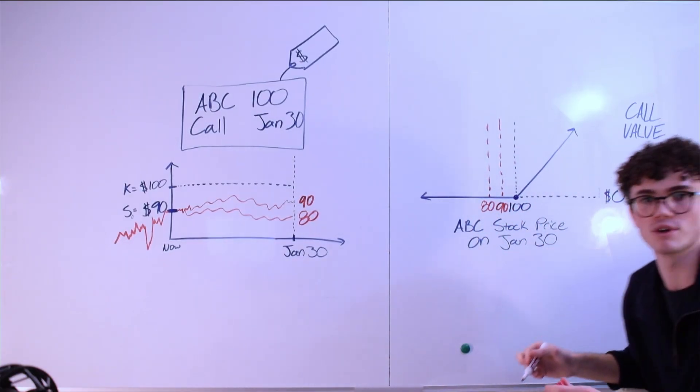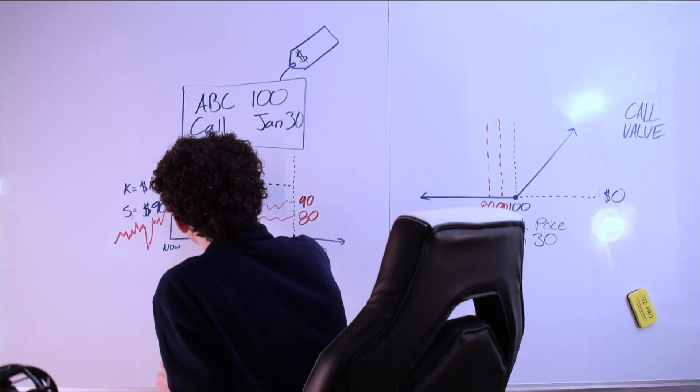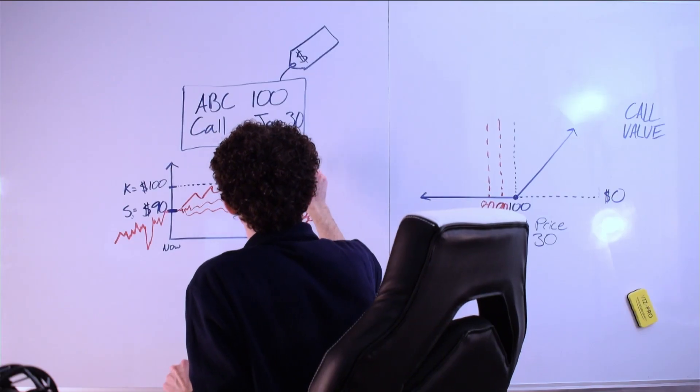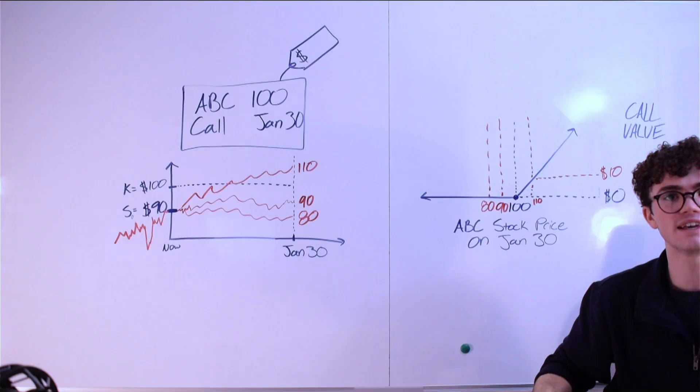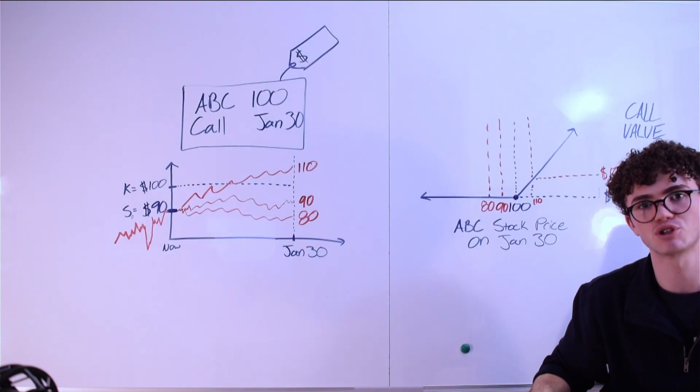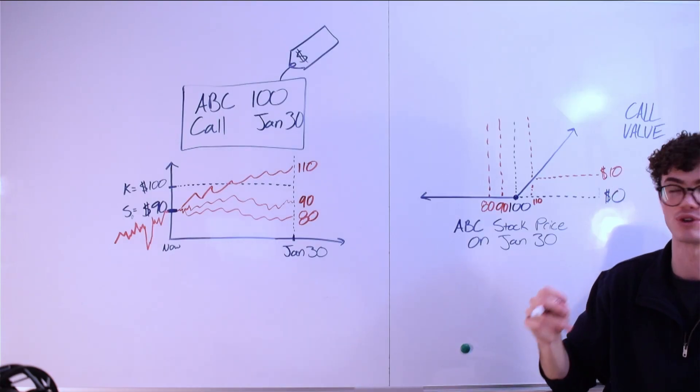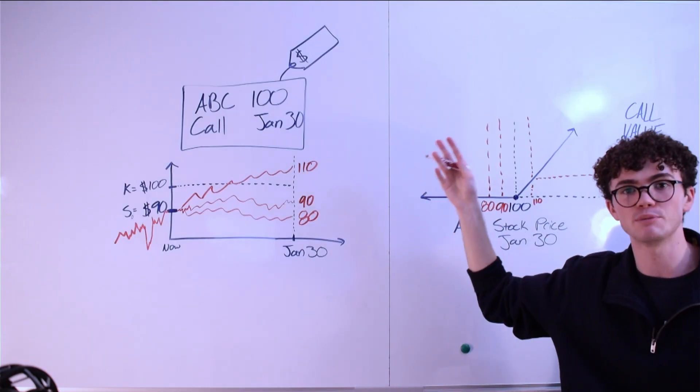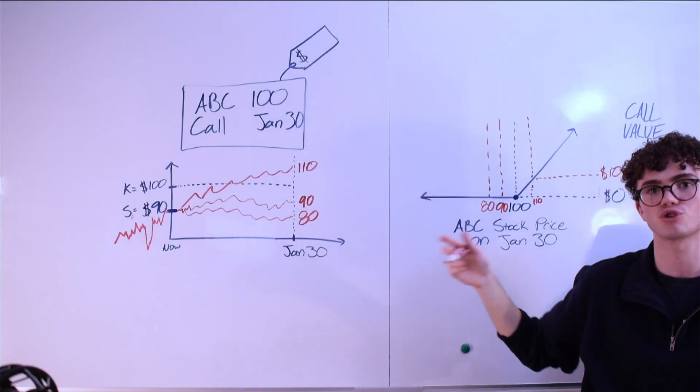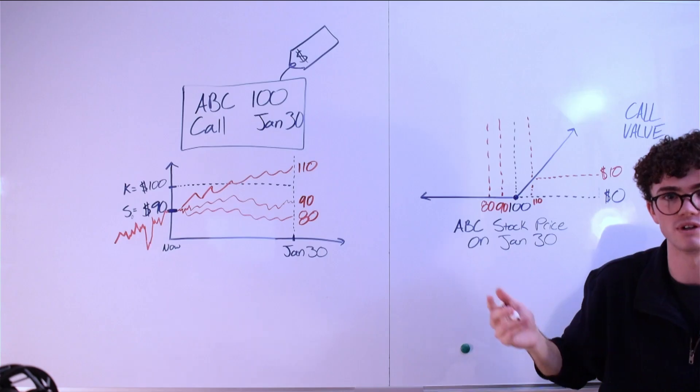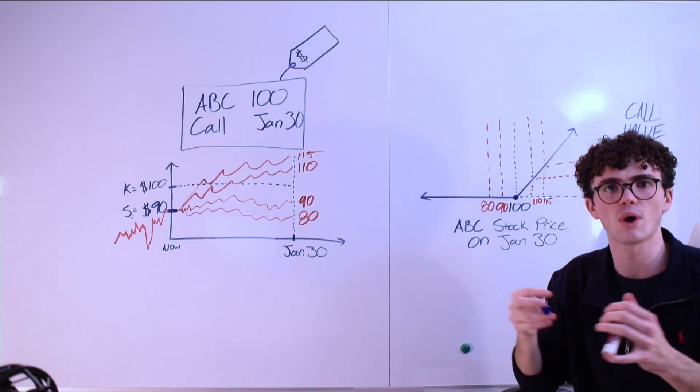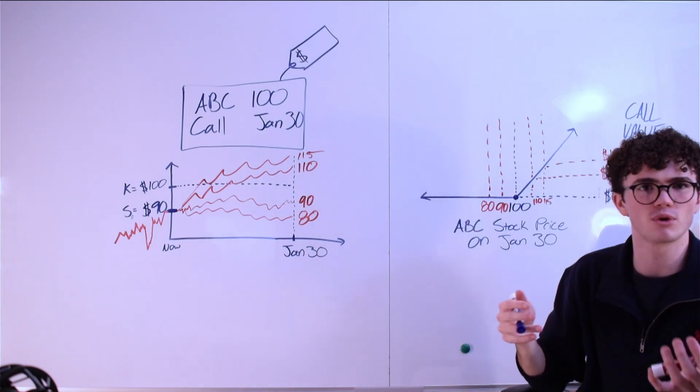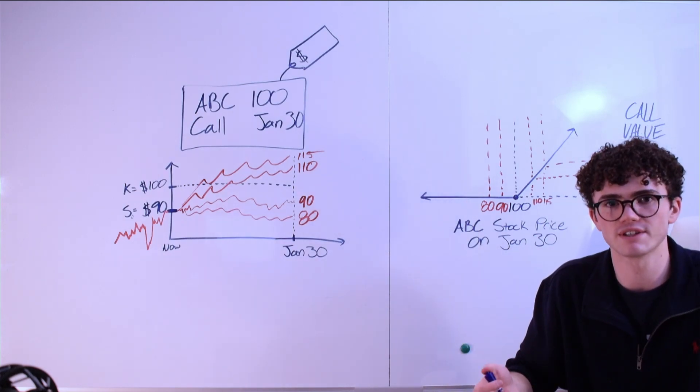Now imagine ABC stock trades up to $110 because they have some good news. In this case, it does make sense to exercise our option at expiration. The option does have intrinsic value. I can buy the stock, ABC stock at $100 and go turn around in the market and sell it at $110. This option could become worth $0, $10, $15, et cetera. So how do we know how much we should pay for it in the first place? What's the fair value of this option?